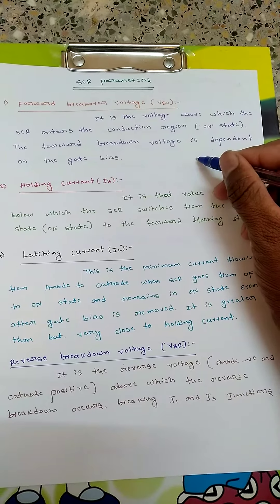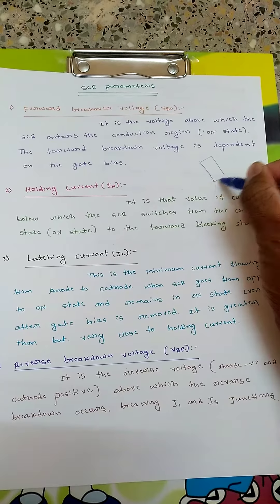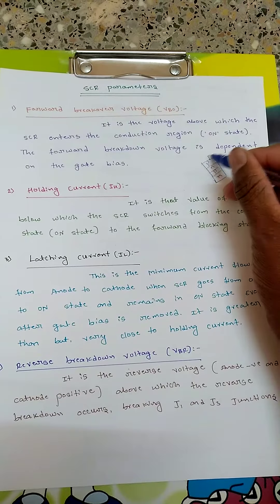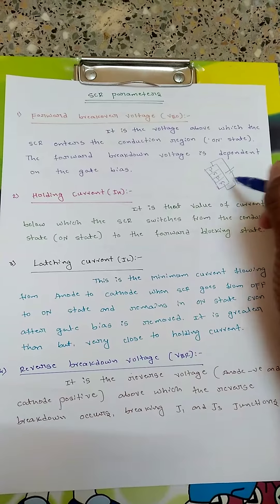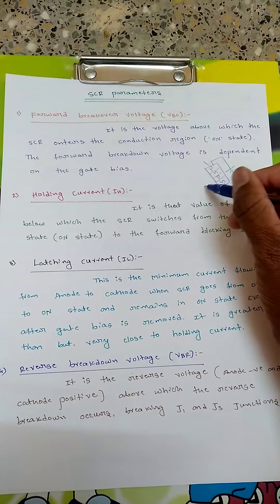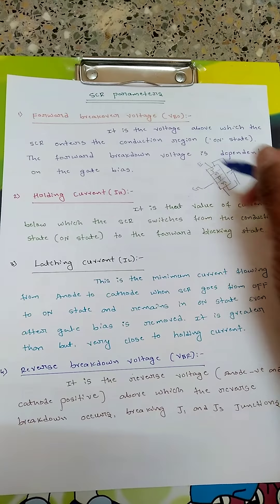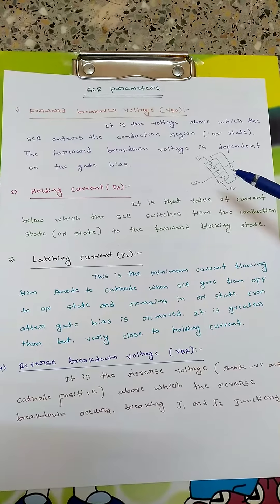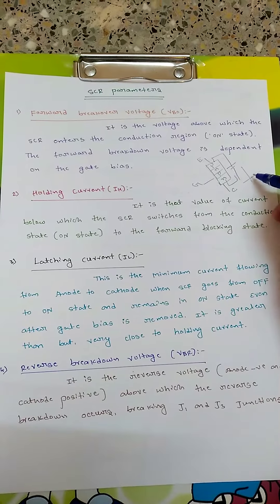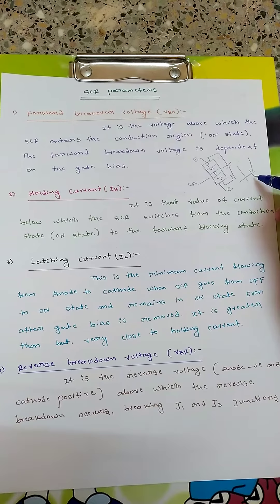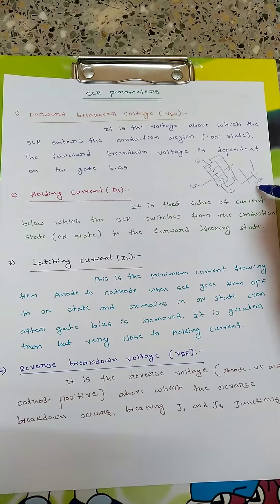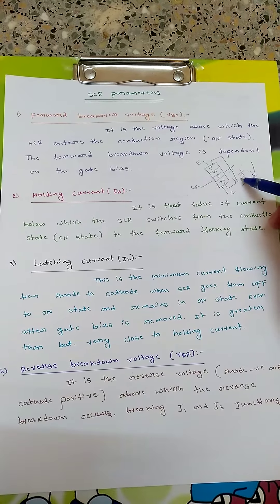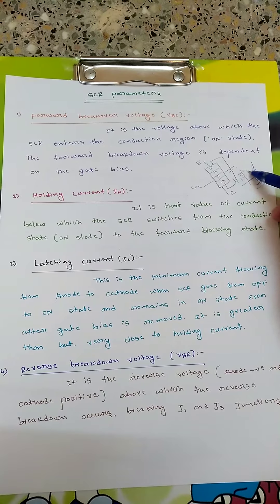The structure of SCR has four layers: PN-PN. A voltage is connected across it — this is the anode, this is the cathode, and this is the gate terminal. Initially it will not be conducting up to some voltage. If you see the characteristics, up to some voltage it will not conduct. The point at which the SCR starts conducting — that point involves the holding current and the latch current.